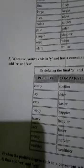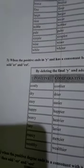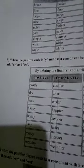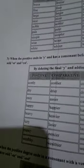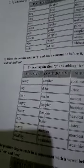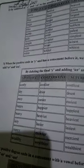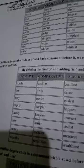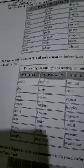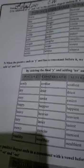Next rule — you have to learn the next rule. When the positive degree ends in Y, meaning that the positive degree ends in Y, and there is a consonant before it. What is the consonant? What is the vowel?